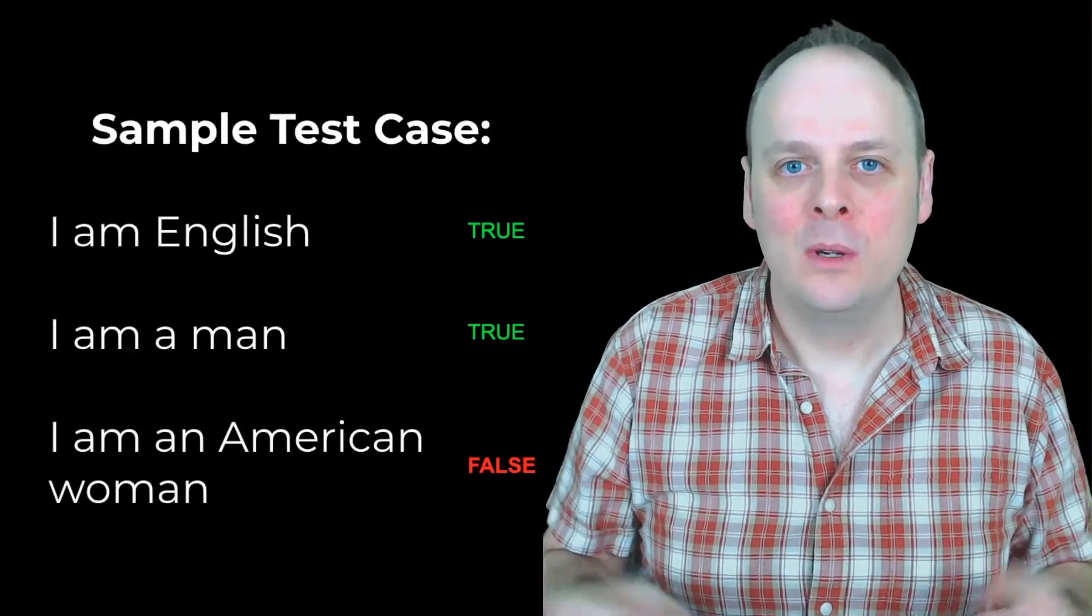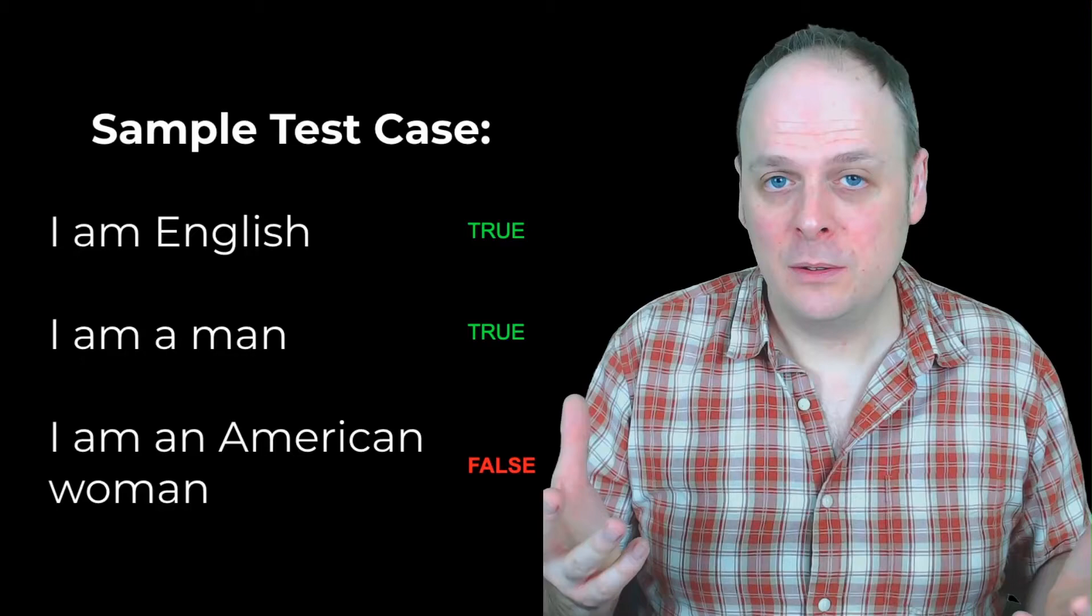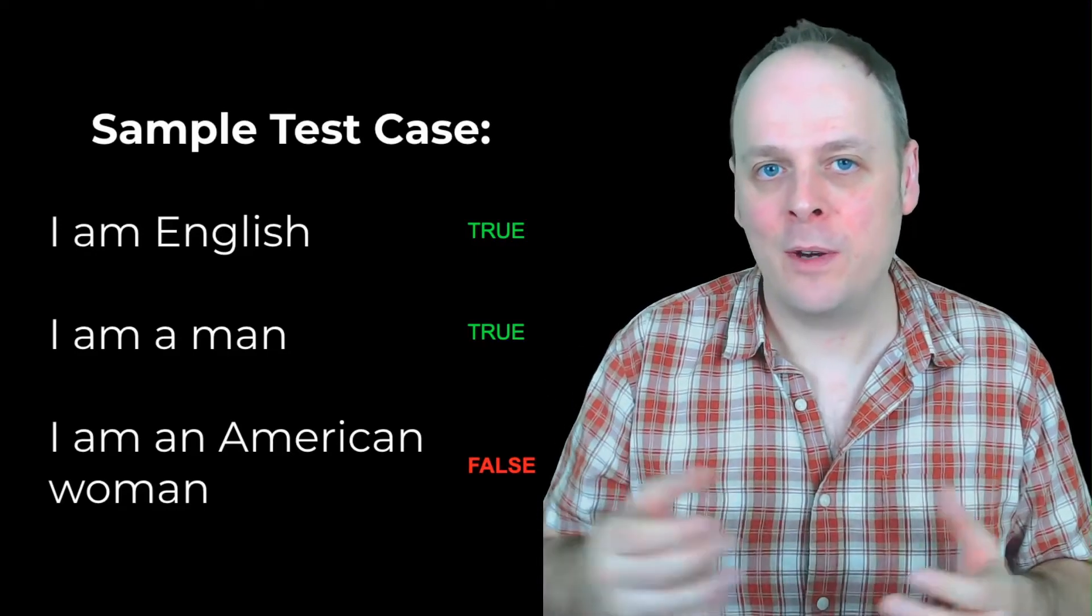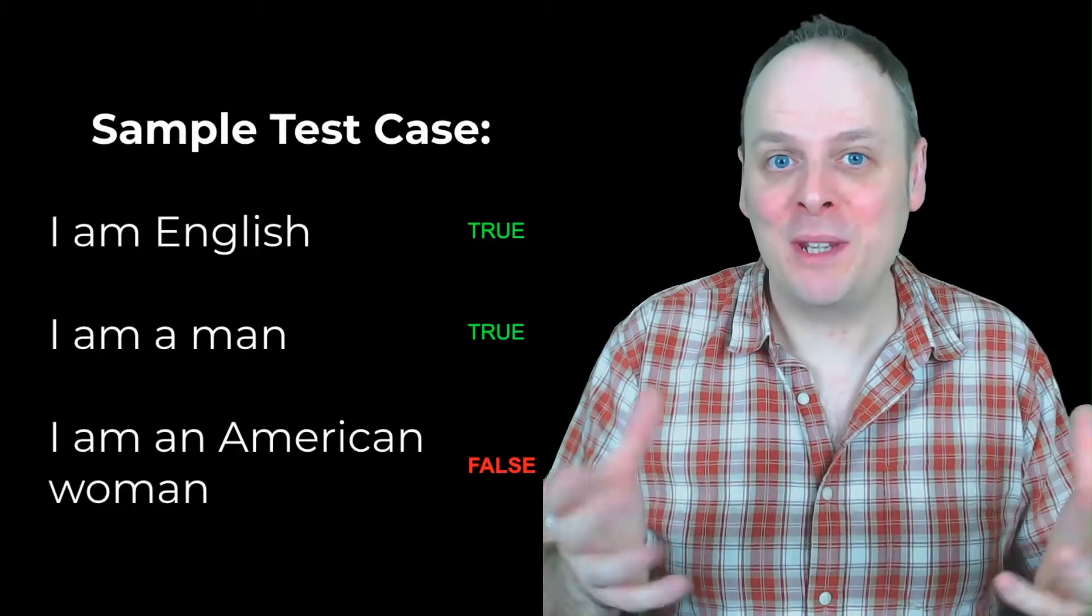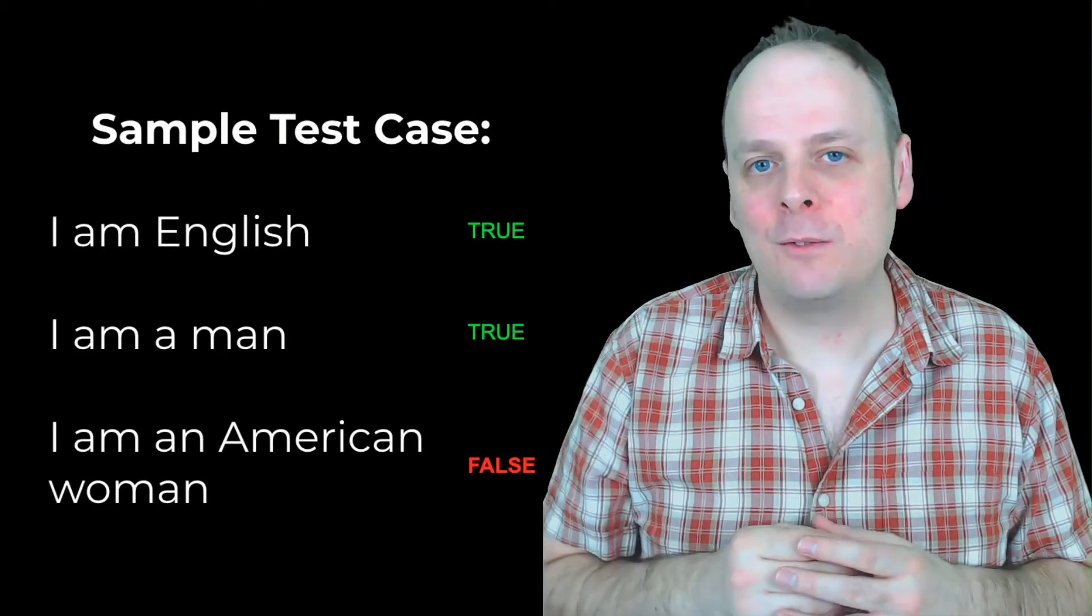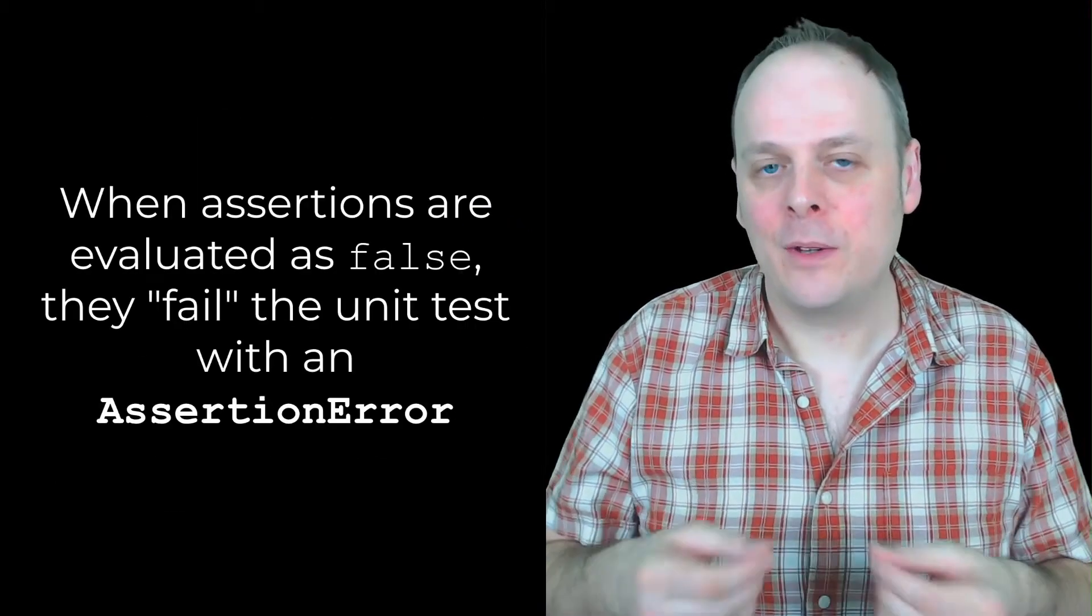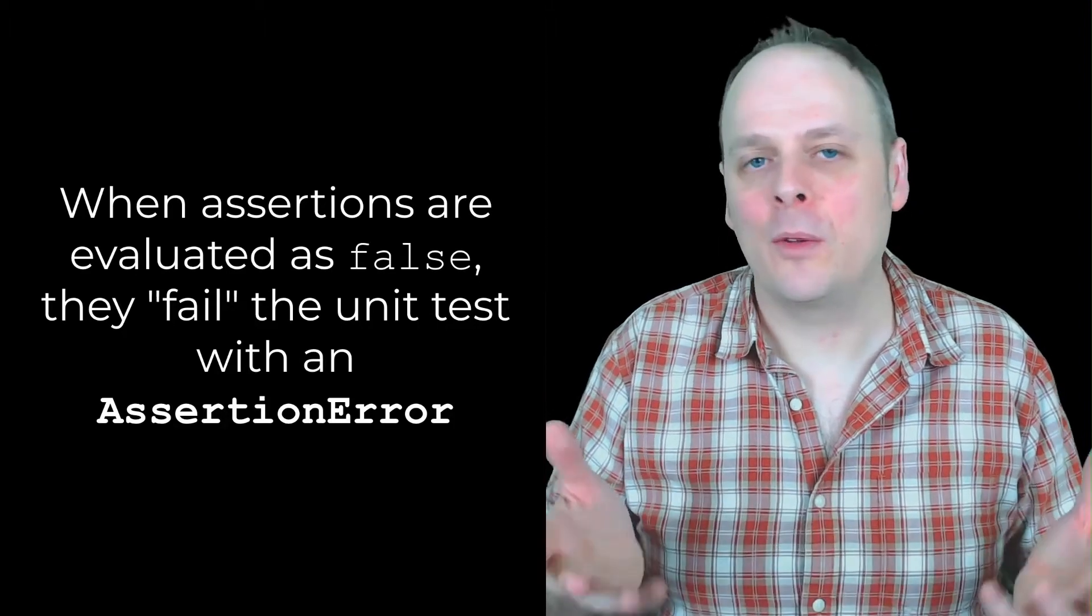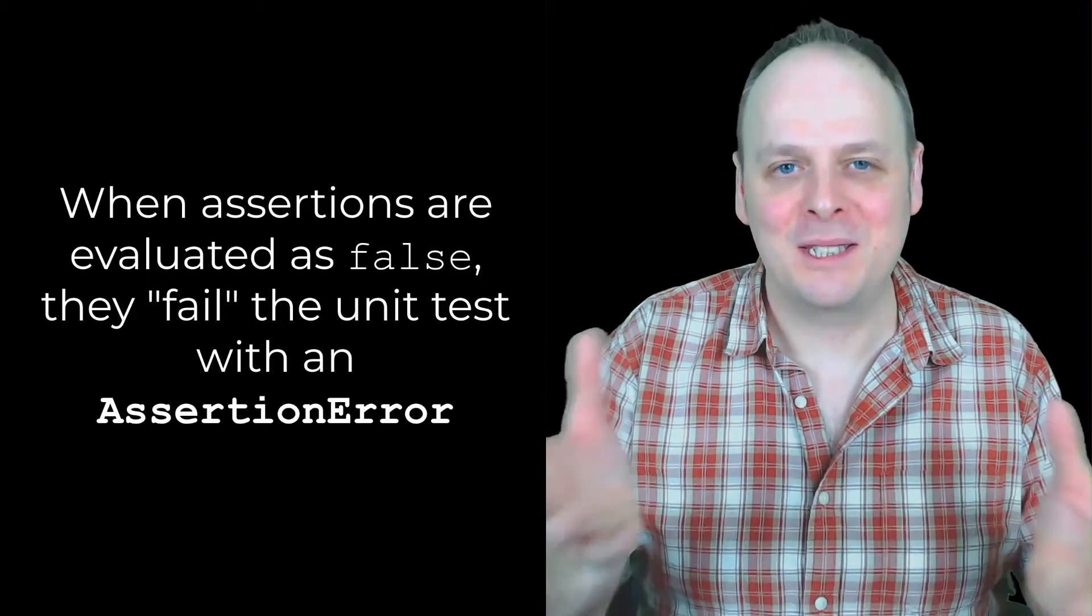Let's suppose we have a sample test case with these assertions. The first assertion, I am English, evaluates to true. The second assertion, I am a man, also evaluates to true. At this point, the test case is still running because everything's going well. Everything's green. Then it hits the third assertion, I am an American woman, and that evaluates to false. Because it evaluates to false, that would cause that particular test case to fail with an assertion error. The assertion error would give us an indication that that particular assertion was the one that caused the test to fail.